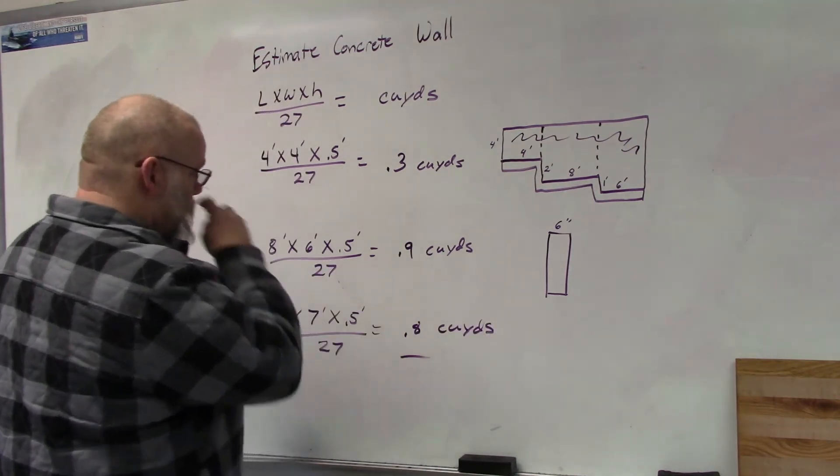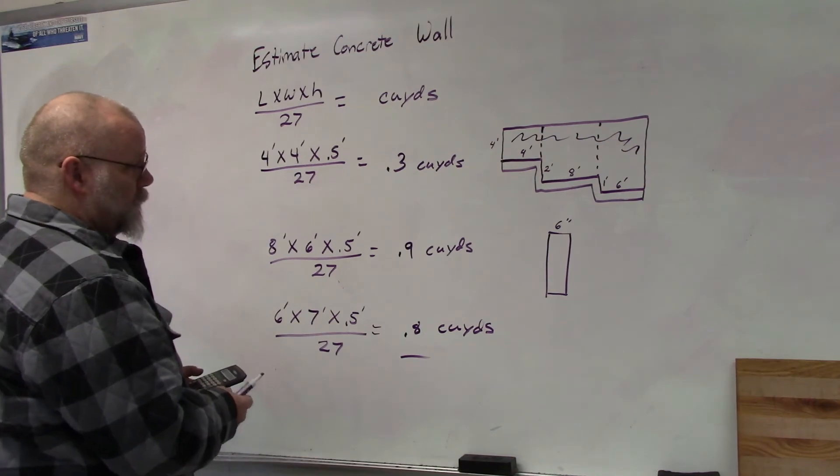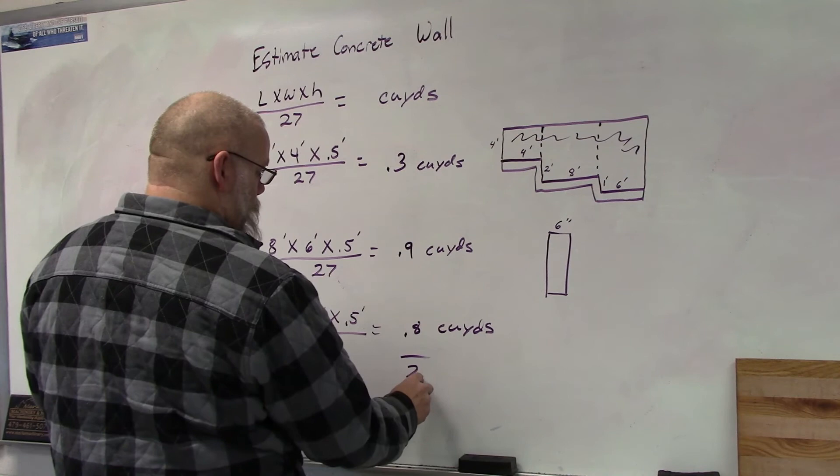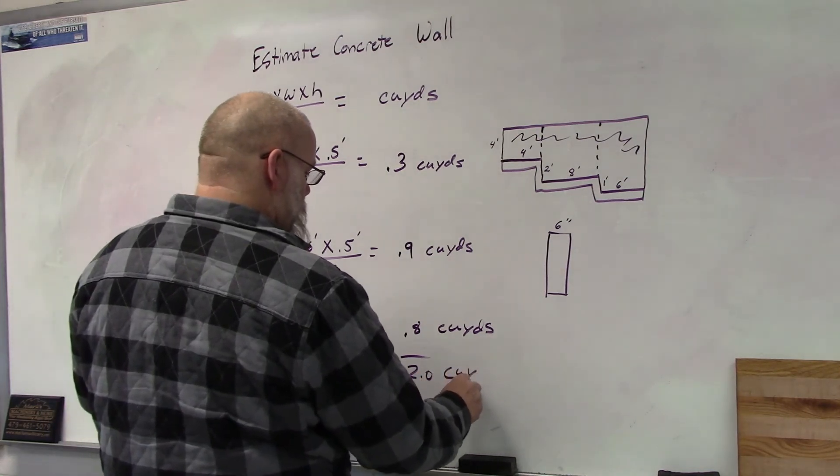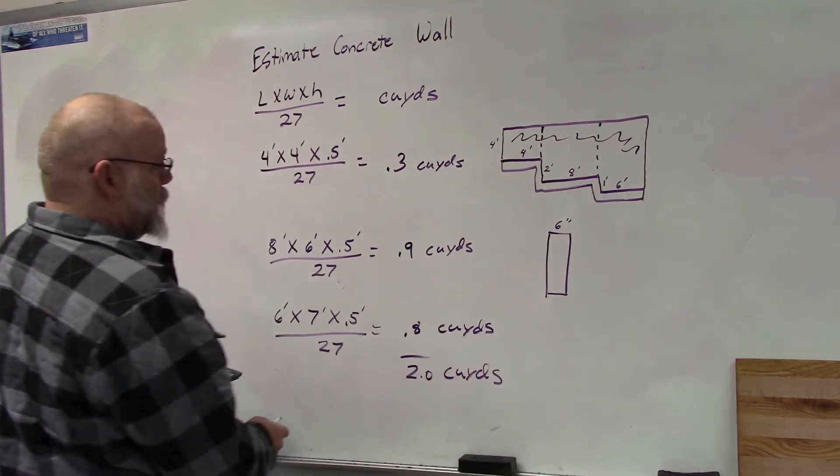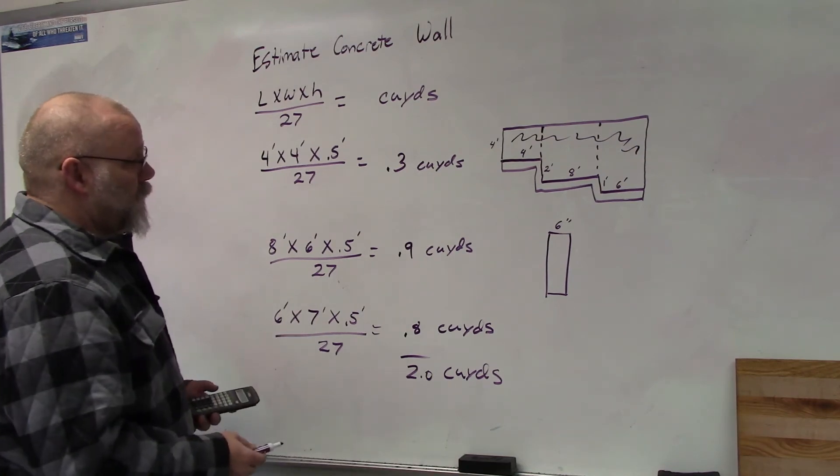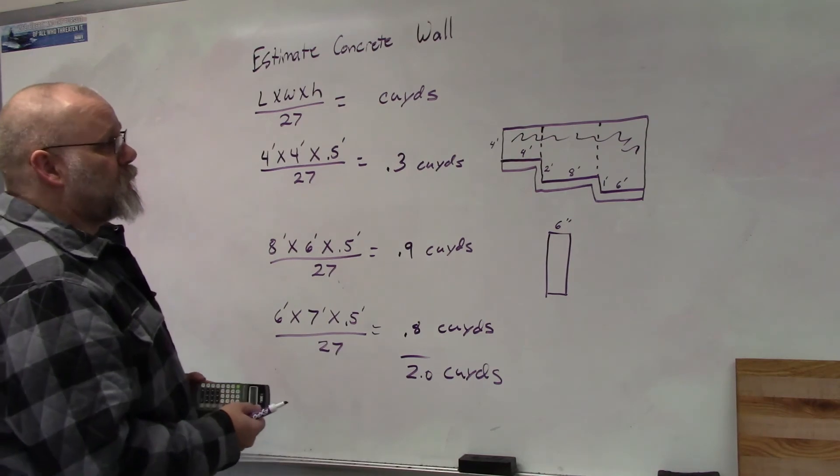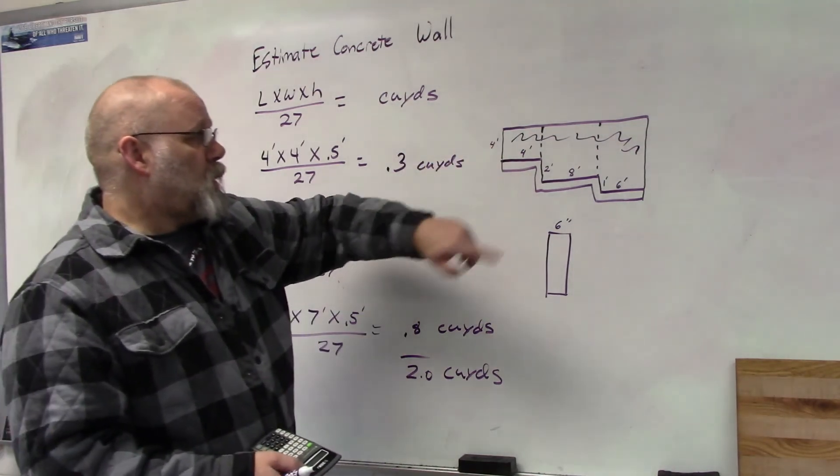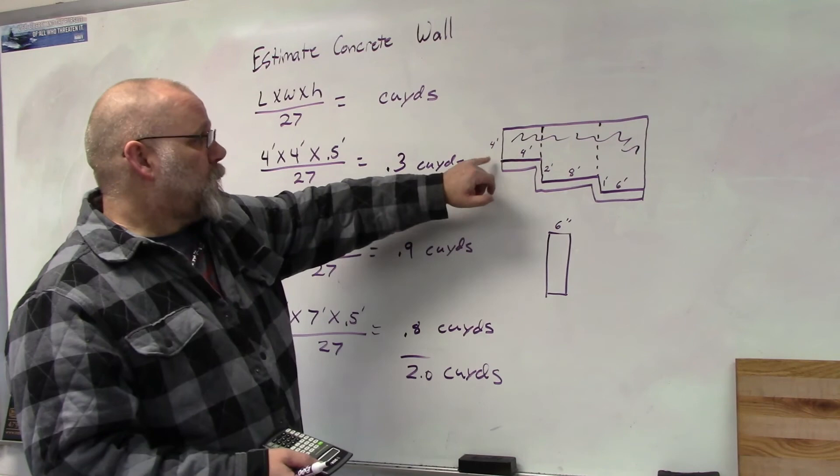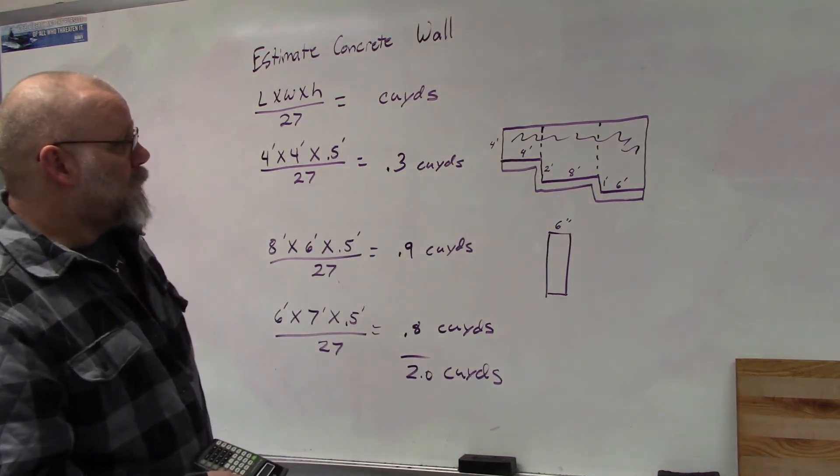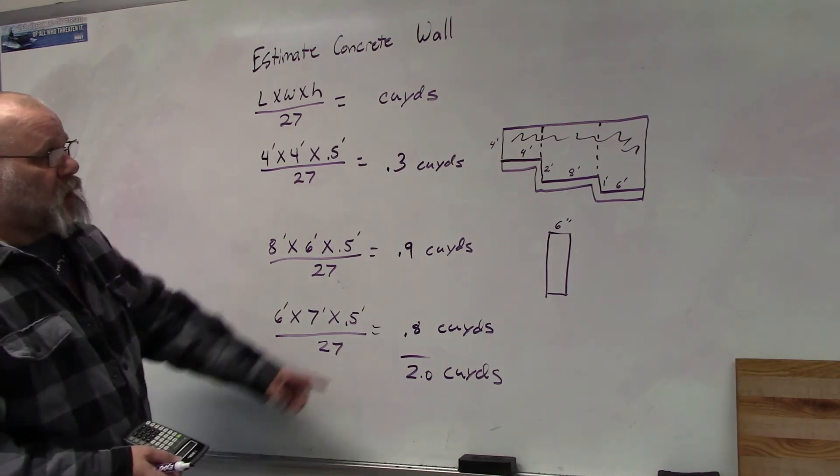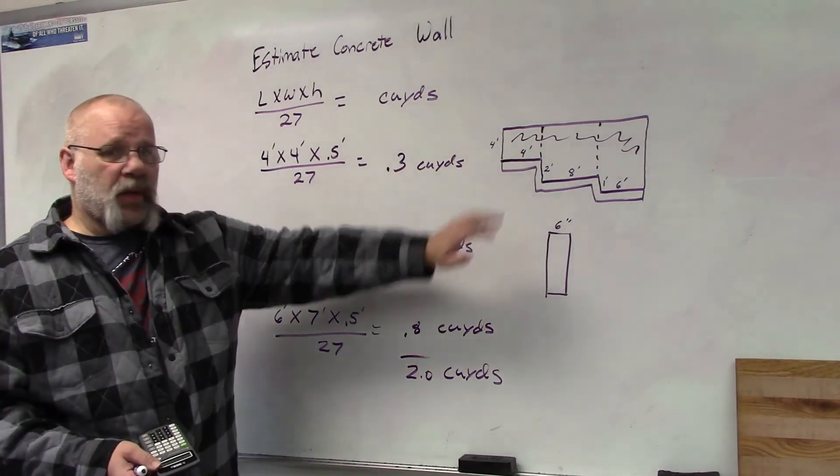I would add the three together and I get 2.0 cubic yards. 8 and 3 is 11 plus 9 is 20, so 2 cubic yards of concrete to pour this wall that's six inches wide and 18 feet long. Concrete wall on a step footing.